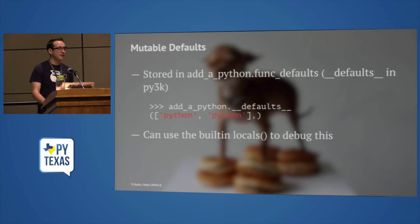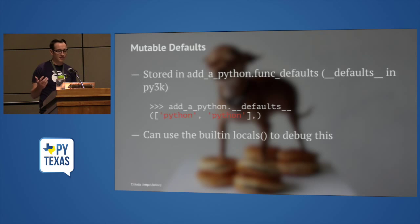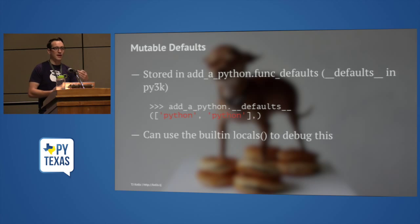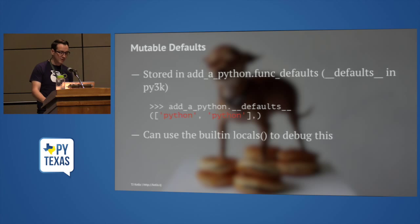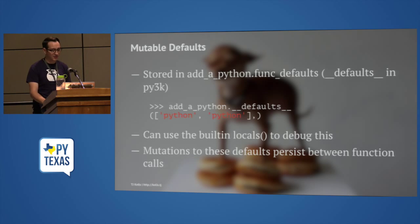The built-in function locals can shed a lot of light on this. If you call locals or print the result of locals, you'll see all the variables that are in scope. Inside that function, if I put print(locals()), I would see that defaults contains many values the more I run the function. Mutations to these defaults persist between function calls because the default object is only created once at compile.